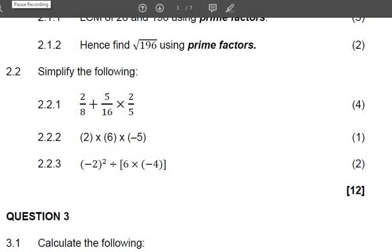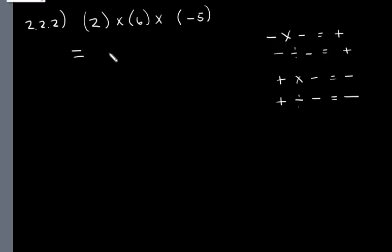Let's look at the next question. 2.2.2 is 2 times 6 times negative 5. So 2 multiplied by 6 is 12. And 12 times negative 5 is negative 60. Please don't forget that we have to say positive times a negative is a negative in order to simplify that. That's an invisible plus. And then 12 times 5 is 60.